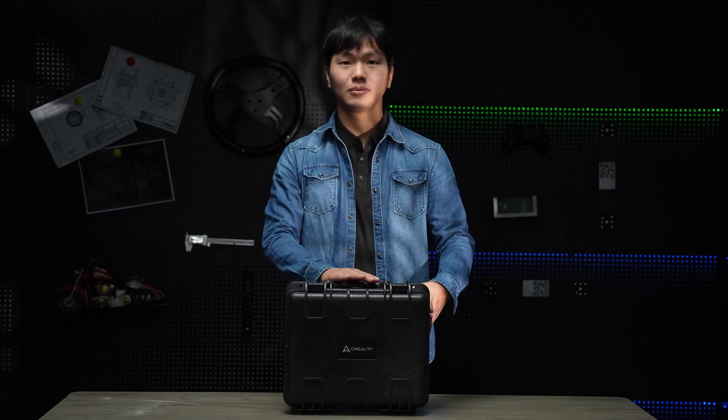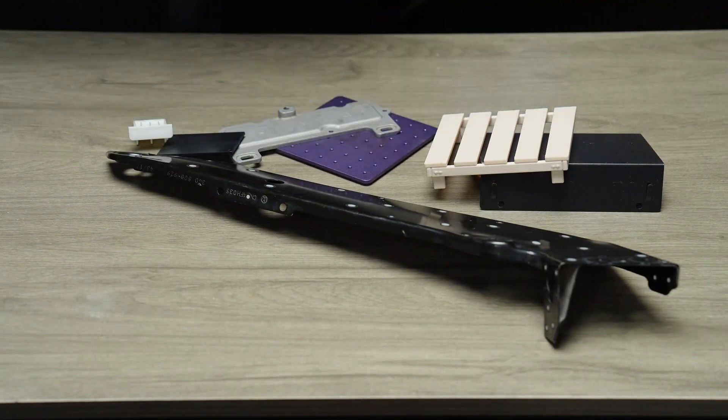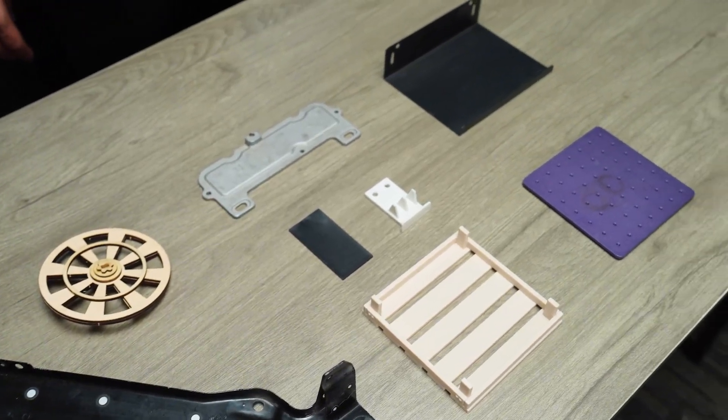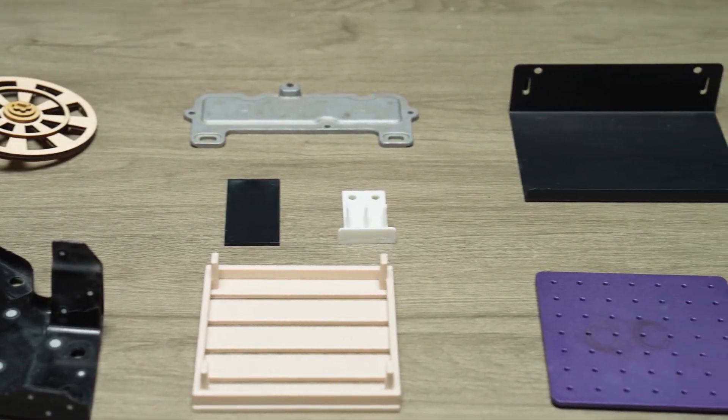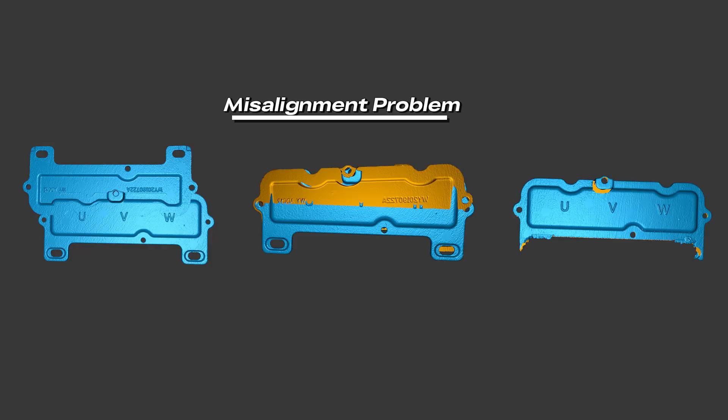Welcome to the Creality 3D Scanner Channel. Today we're going to explore how to scan one of the trickiest types of objects, thin-walled parts. These are parts with very thin structures, like sheet metal, casings, or enclosures. The biggest challenge when scanning them is aligning the front and back surfaces accurately. Why is that?